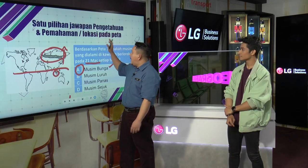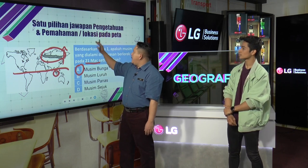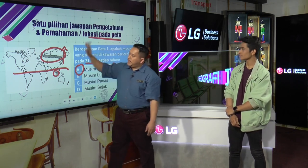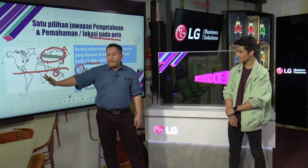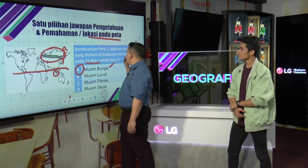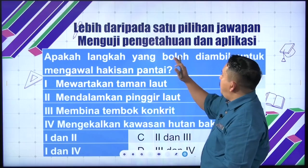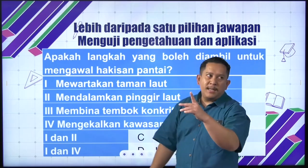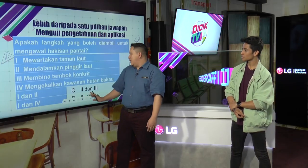Ini adalah menguji pengetahuan dan pemahaman pada lokasi pada peta. Masa ada peta dunia ataupun peta Malaysia. Kita teruskan. Lebih daripada satu pilihan jawapan — tadi satu pilihan jawapan je, yang ni lebih satu. Dia nak dua.